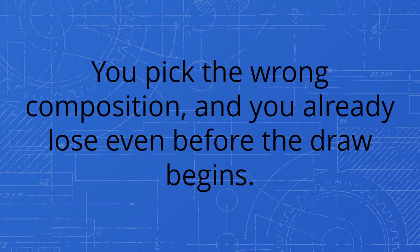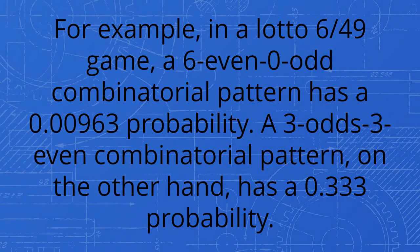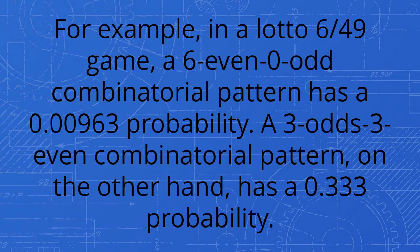You pick the wrong composition, and you already lose even before the draw begins. For example, in a lotto 6/49 game, a 6-even-0-odd combinatorial pattern has a 0.00963 probability. A 3-odd-3-even combinatorial pattern, on the other hand, has a 0.333 probability.